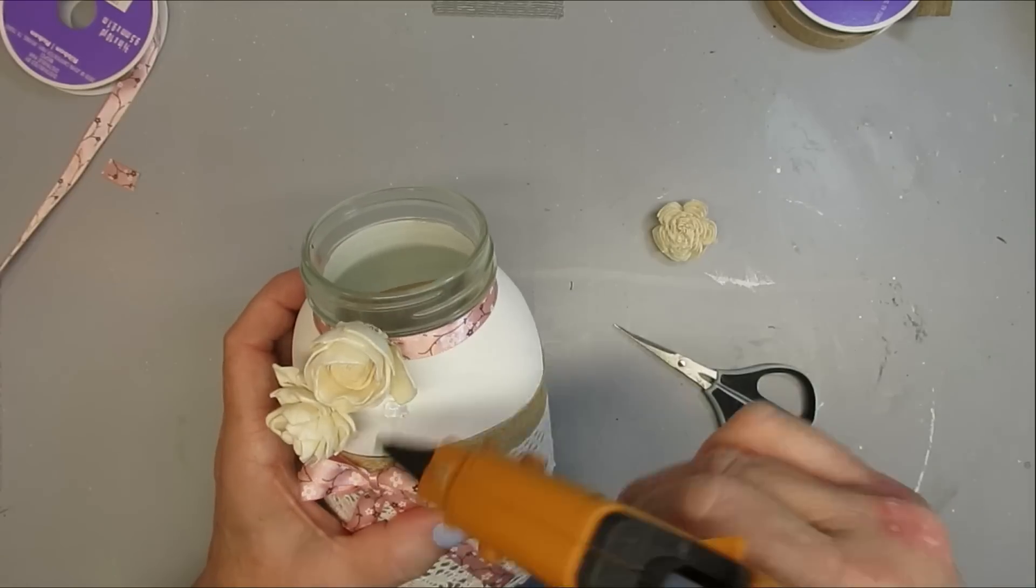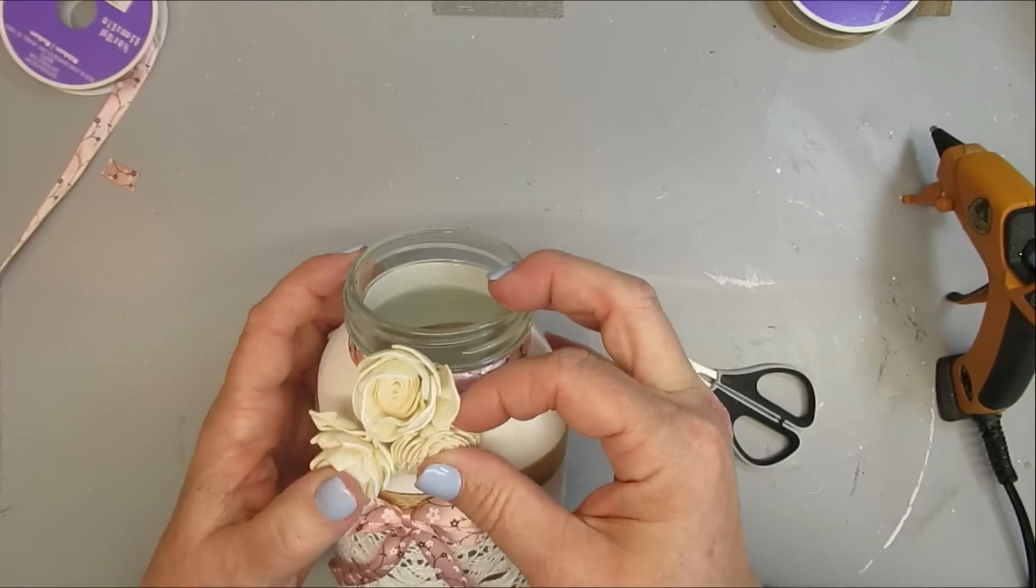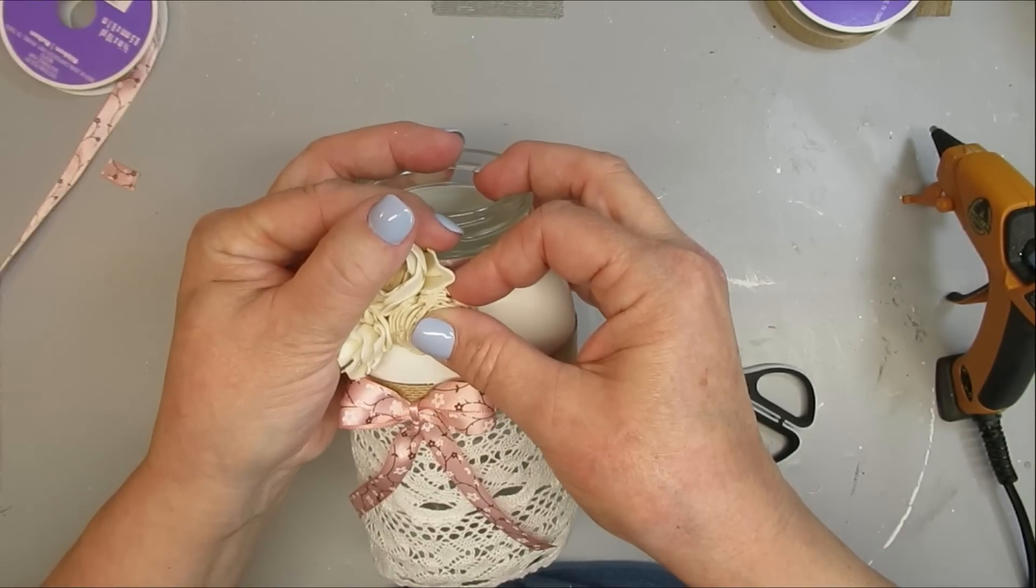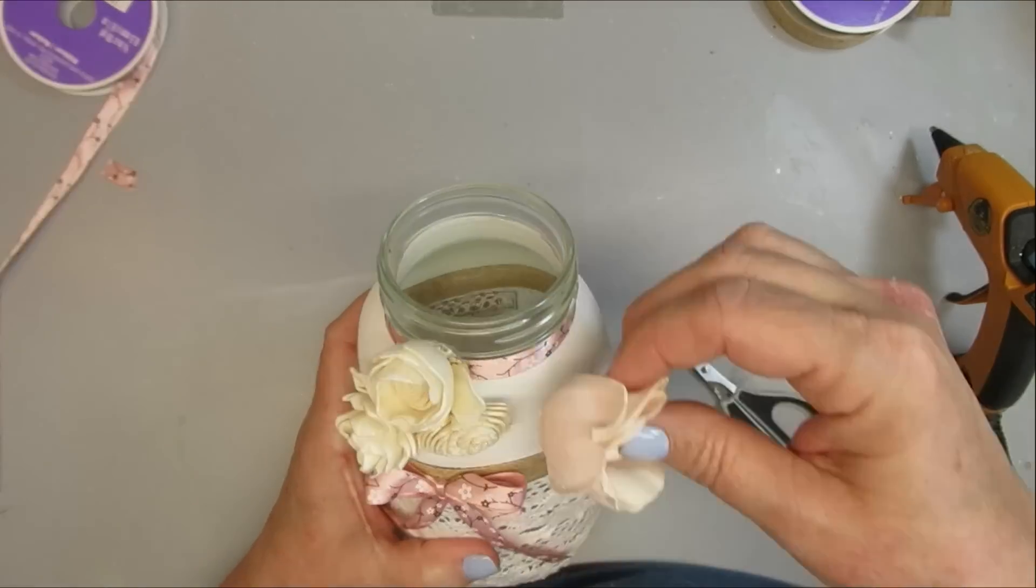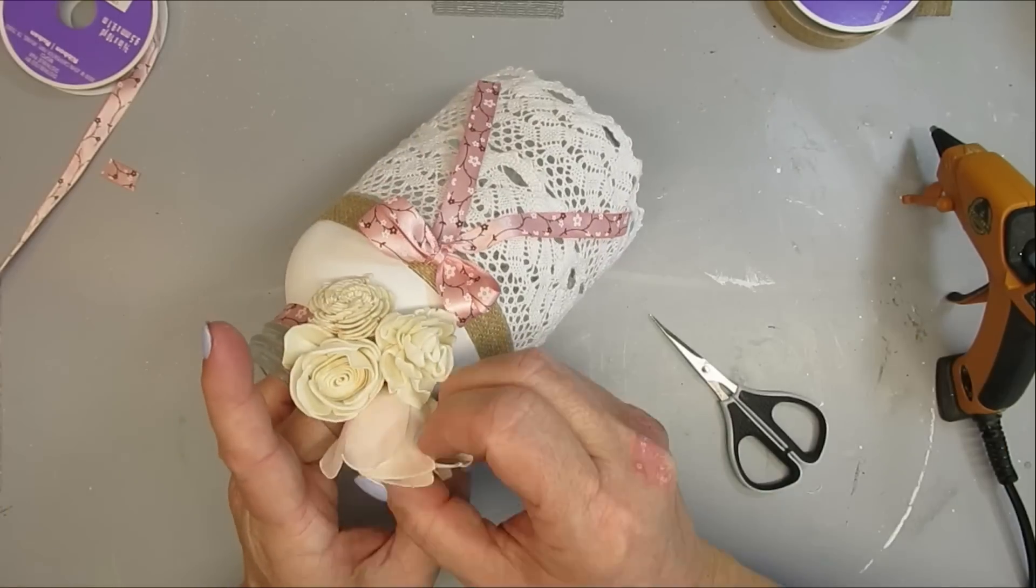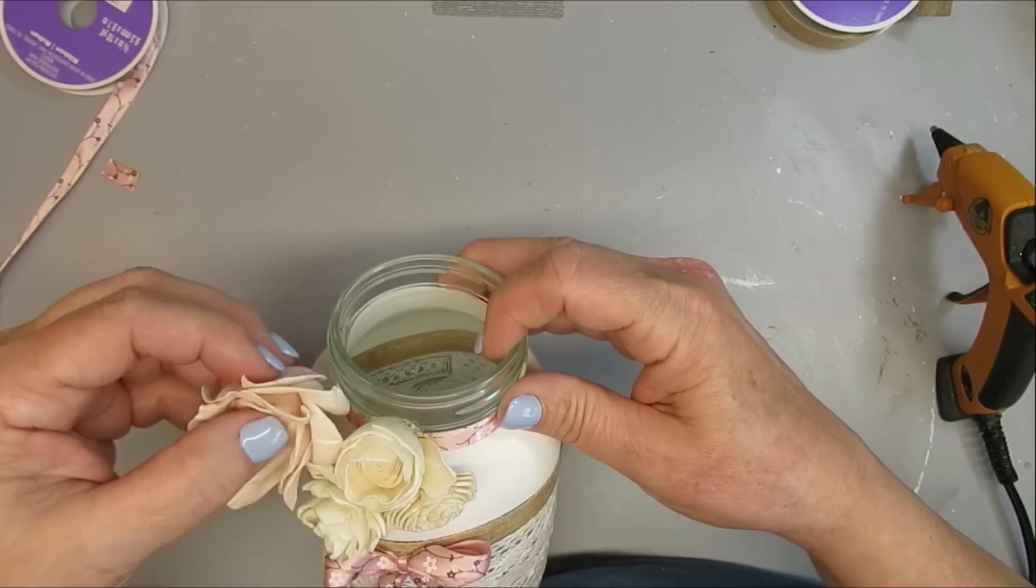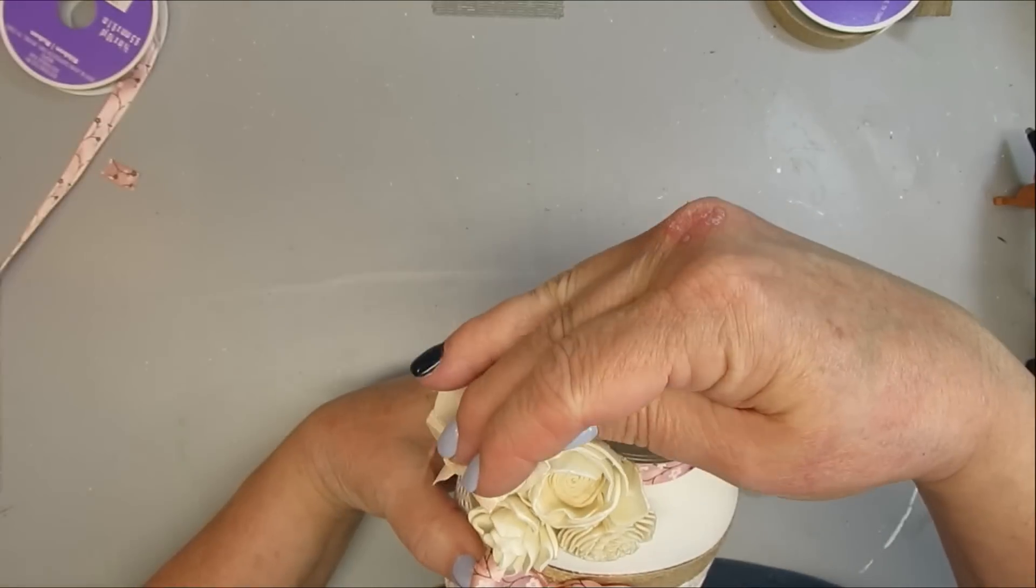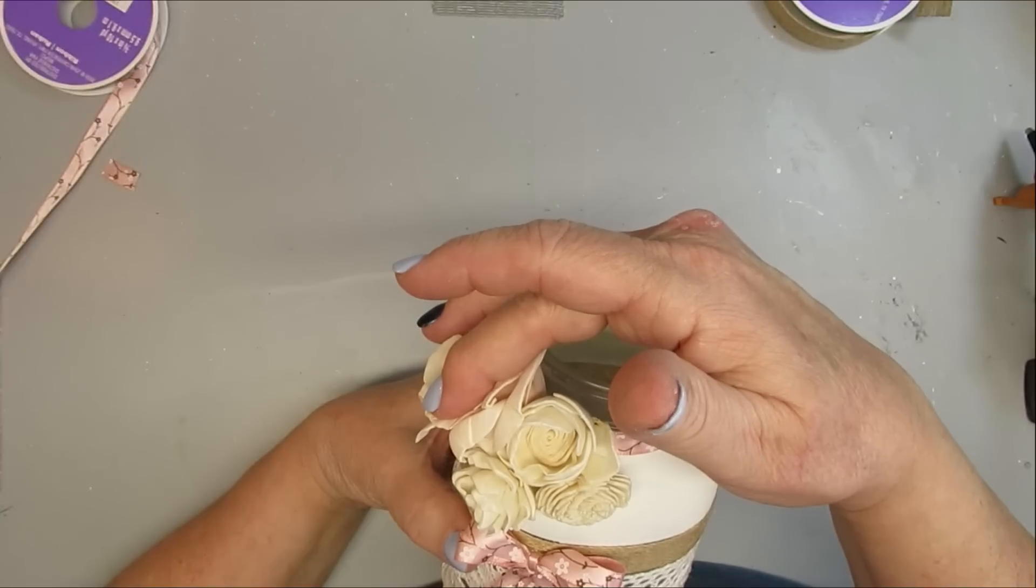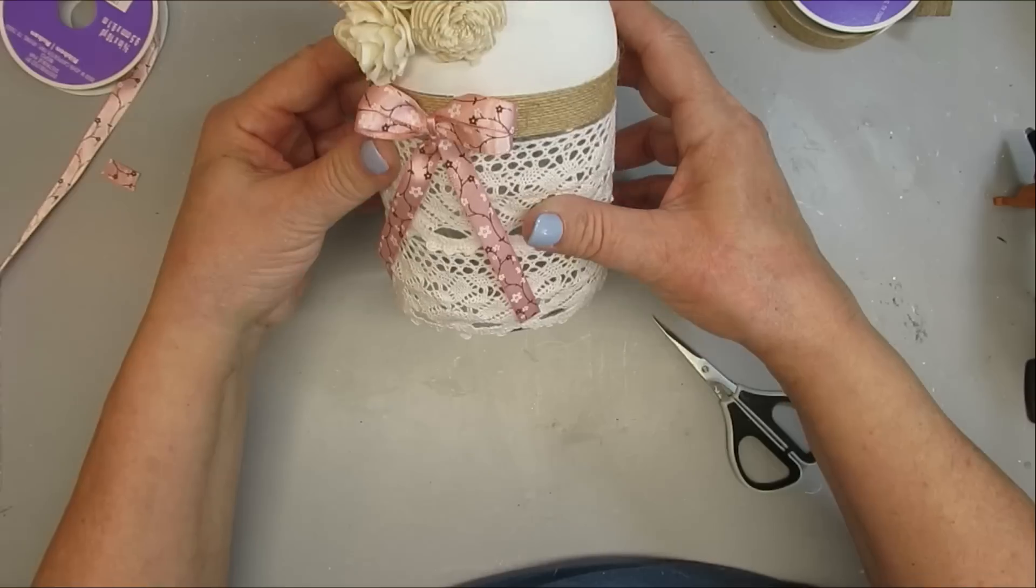Using the same ribbon, I created a double loop bow. I'm just always an off-center person - gluing things in the center, it just doesn't do it for me. Anyway, I'm gonna fix these tails so they sit really nicely, and then I'm going to add some sola wood flowers to the one side. And I really love how this one turned out.